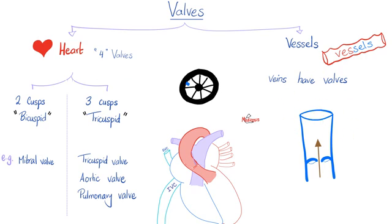Now we'll review the fetal circulation. Please watch my fetal circulation video first. Here is the placenta providing the baby with pure oxygenated blood. This oxygenated blood goes through the umbilical vein — a vessel going to the heart — carrying oxygenated blood. This oxygenated blood goes up and we bypass the liver through the ductus venosus, ending up in the inferior vena cava, and then going to the right atrium.